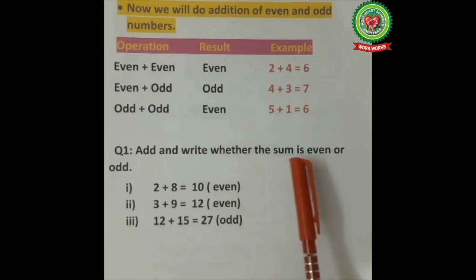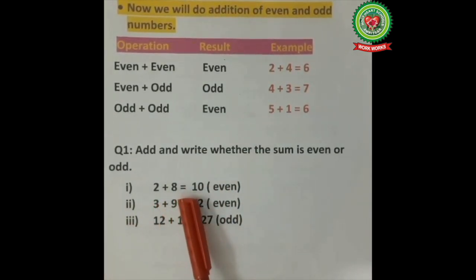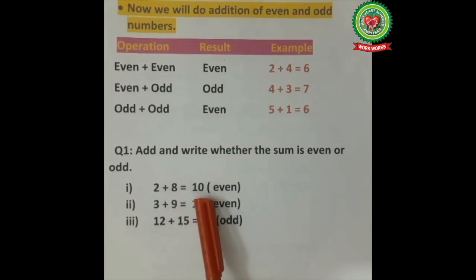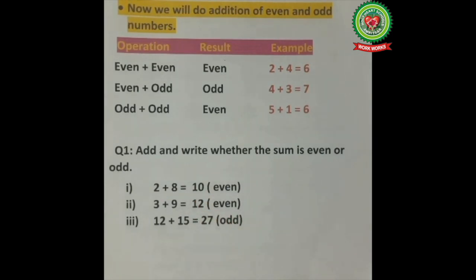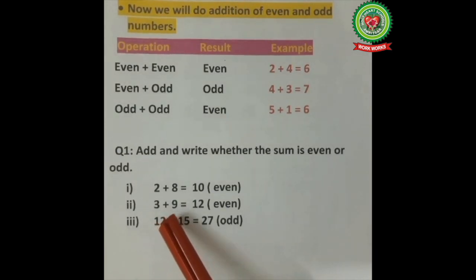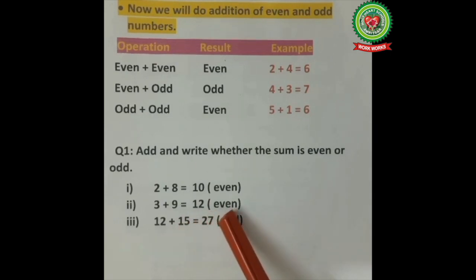Let's practice: add and write whether the sum is even or odd. First, 2 plus 8 — both are even numbers, so 2 plus 8 equals 10, and the answer is even. Second, 3 plus 9 — these are odd numbers. When we add odd plus odd, the answer is even. So 3 plus 9 equals 12, and we got an even answer.